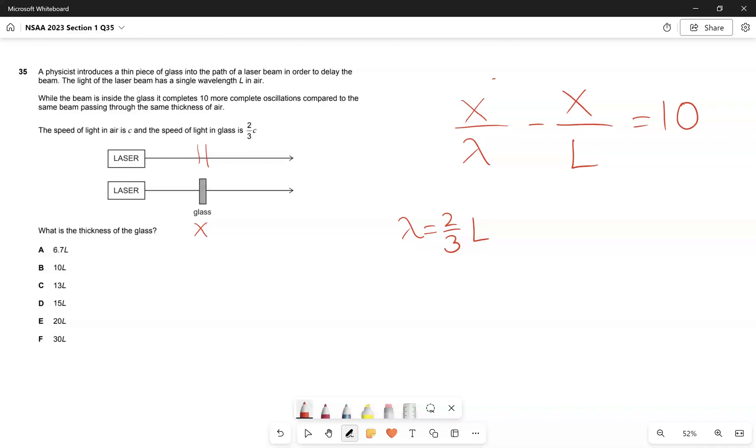If we substitute lambda is two-thirds l, we get x over two-thirds l, which means we have three over two x take away x over l equals 10. Then three over two x take away x is a half x, and if we move the l to the other side we get half x equals 10 l, so x equals 20 l. The answer is E.